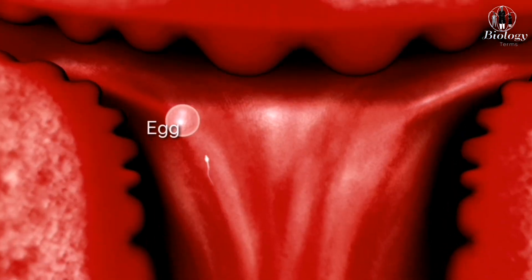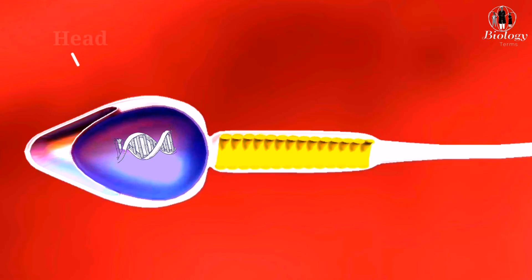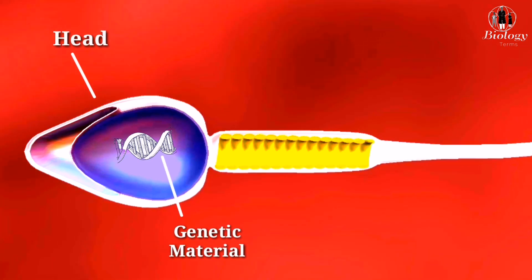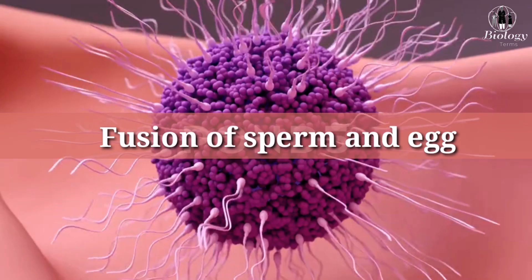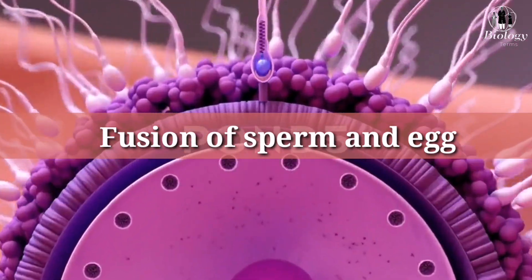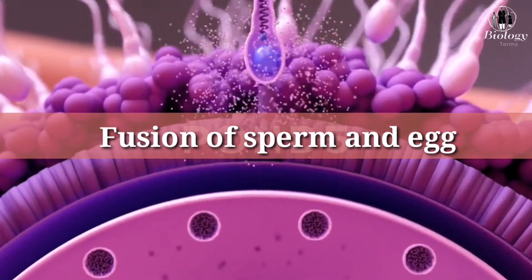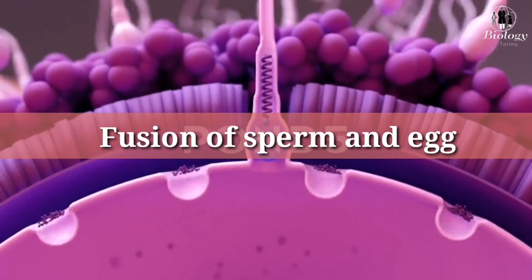If a sperm cell meets the egg cell in the fallopian tube, fertilization can occur. The head of the sperm cell contains genetic material, while the tail helps it swim towards the egg. When the sperm cell reaches the egg, it penetrates the outer layer of the egg and releases its genetic material.